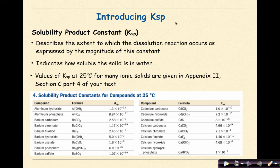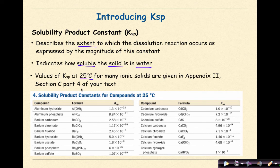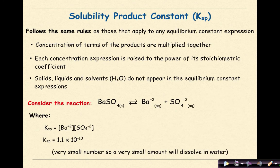KSP, also known as the solubility product constant, describes the extent to which the dissolution reaction occurs as expressed by the magnitude of this constant. It indicates how soluble the solid is in water. Values of KSP at 25 degrees Celsius for many ionic solids are given in Appendix 2, Section C, Part 4 of your text. KSP follows the same rules as any equilibrium constant expression.